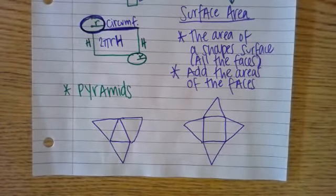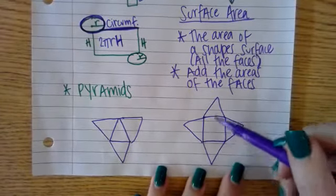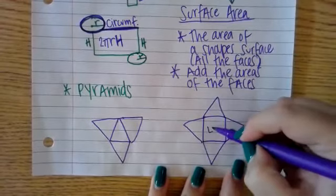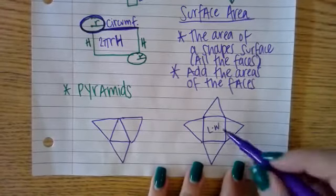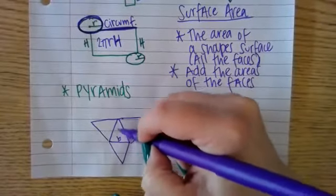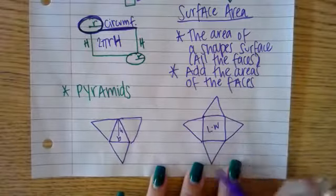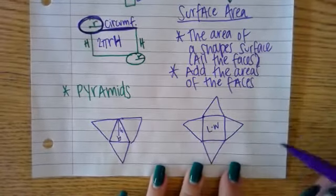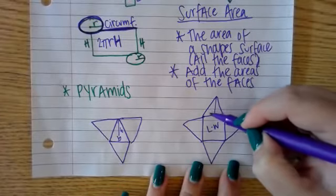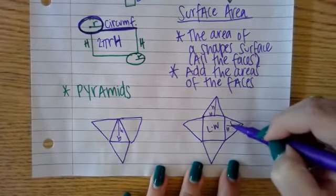When we find the surface area of a pyramid, we have to find the area of the base shape. For this one, we're going to do length times width to find the area of the square. With this triangle, we're going to do base times height. And with all of our faces, all of our faces are triangles, so we're going to do base times height for all of them.